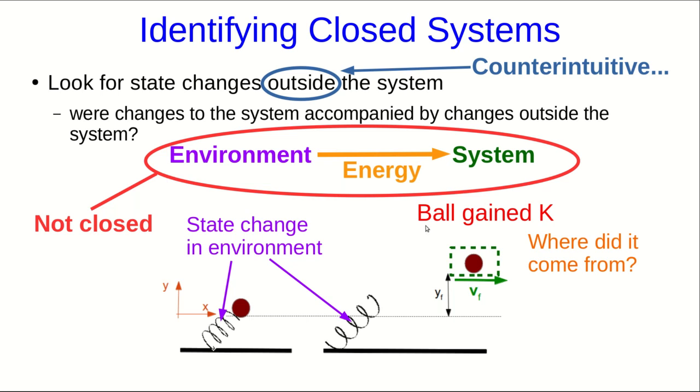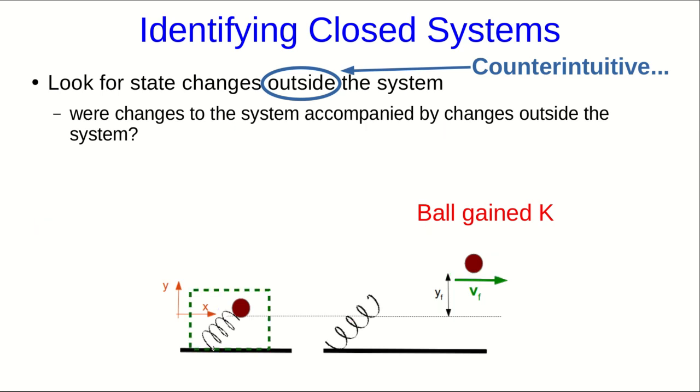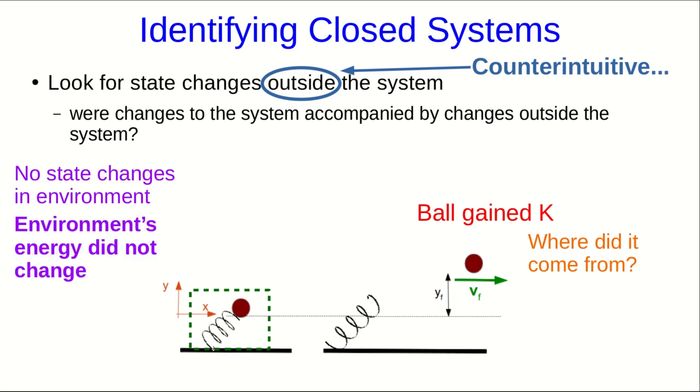So, now let's try a different system definition and see where that gets us. Let's instead think of the ball in the spring as our system. And again, let's ask where the gain in the kinetic energy of the ball came from. Well, there were no state changes in the environment now, and so the environment's energy can't have changed.